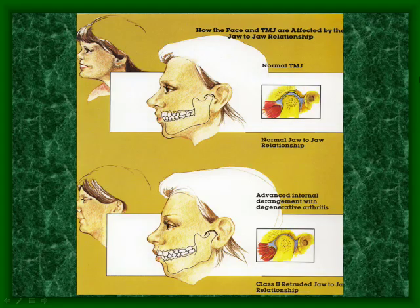TMD not only affects the jaw joint, but also affects the facial shape. With a person affected by TMD, the chin becomes slightly lower and the cheeks become swollen.